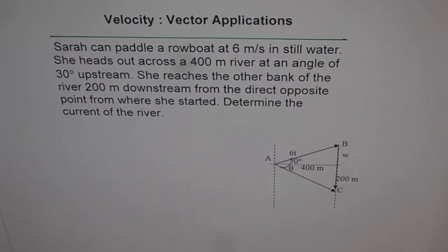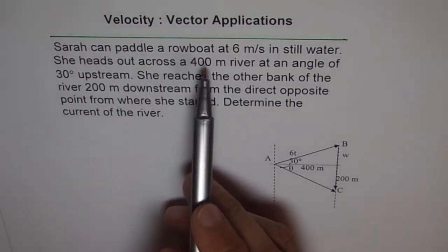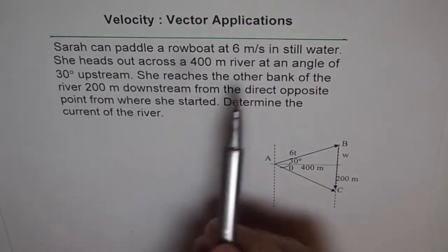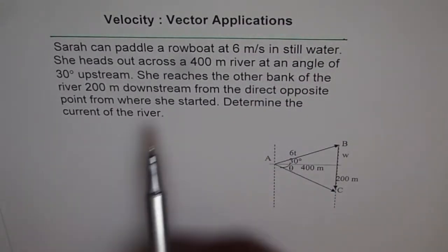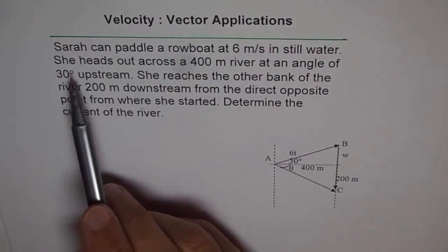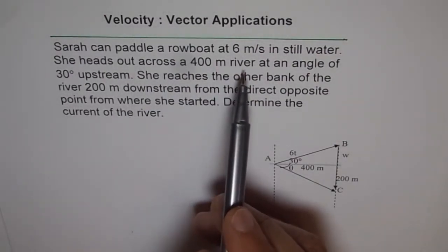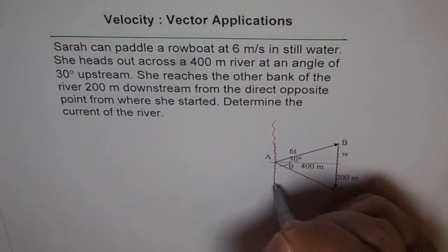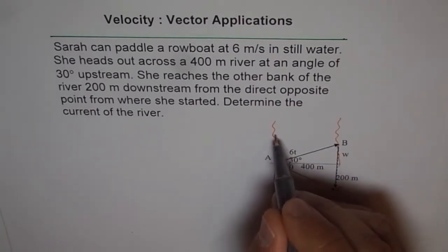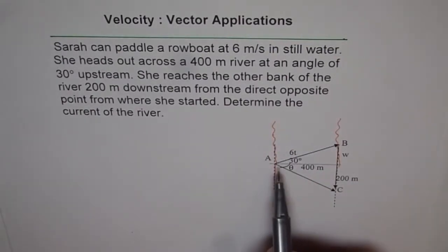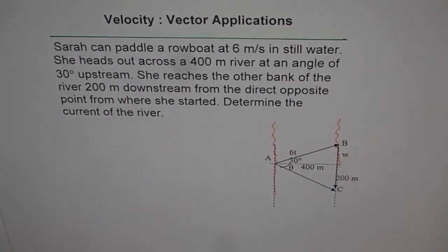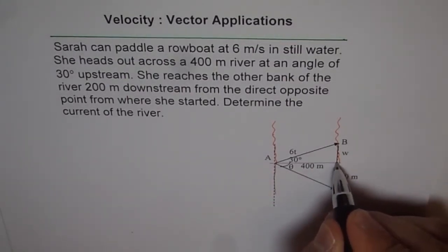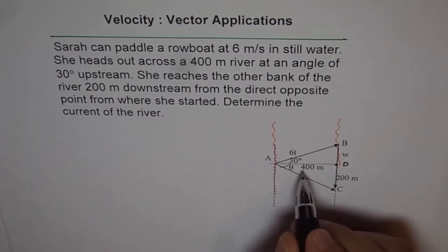The idea here is to make you understand how to draw it, so that if you have a similar question, you can do it on your own. Sarah can paddle a rowboat at 6 meters per second in still water — so that is the velocity of Sarah. She heads out across a 400 meter river. This is our river, and the width from here to here is 400 meters — that is the dotted line. Let's call this point A and this point O, so A to O is 400 meters.